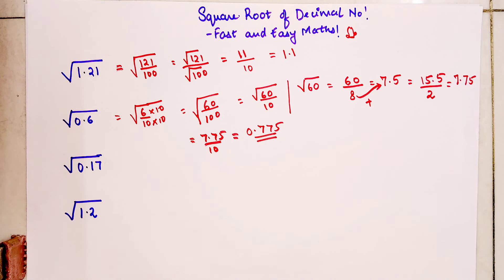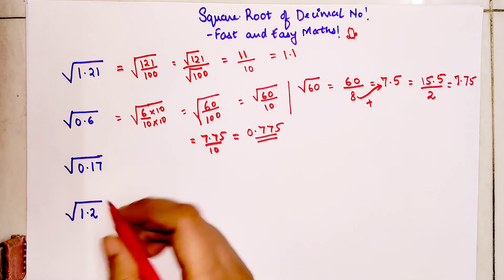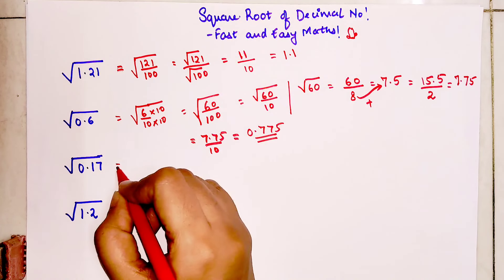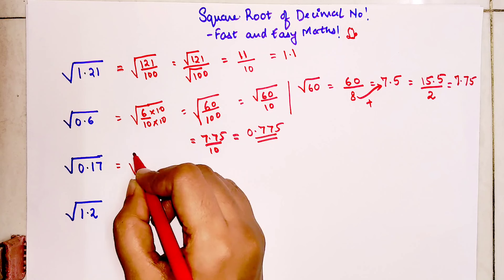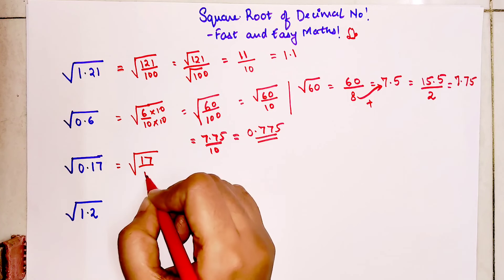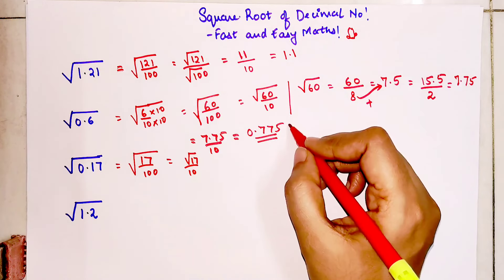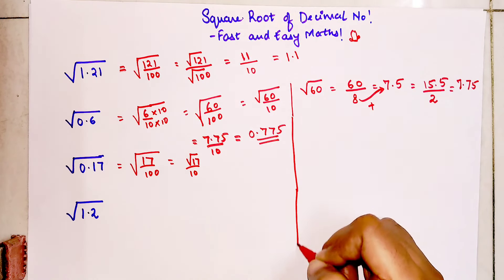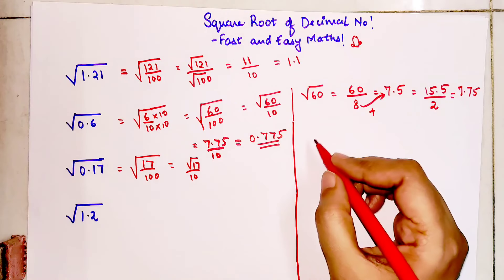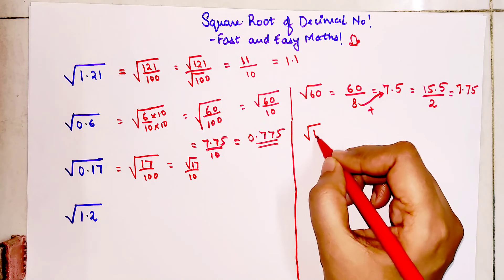Let us very quickly see how this works for one more number. So now, see look over here, this can be written as 17 upon 100. So basically I just need to find square root of 17 upon 10. Let me do these workings over here. So square root of 17.